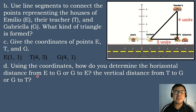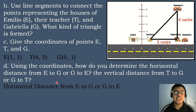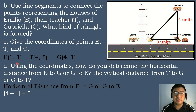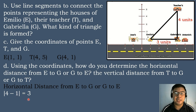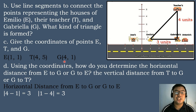Using the coordinates, how do you determine the horizontal distance from E to G or G to E? We will subtract the absolute value of the x-values of the coordinates. So the absolute value of 4 minus 1 equals 3, or alternately, the absolute value of 1 minus 4 equals negative 3, and the absolute value of negative 3 is positive 3.